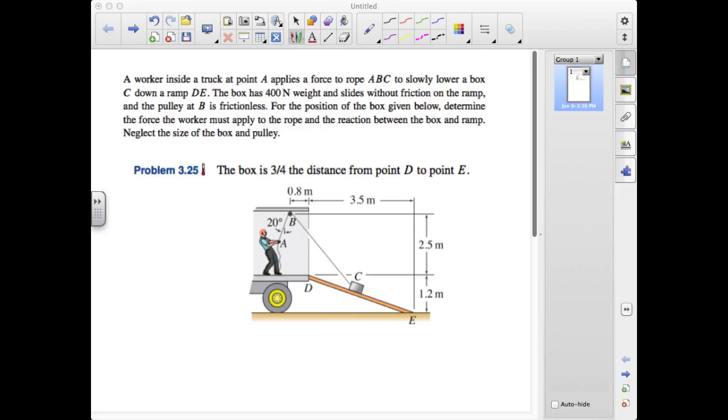We're given the box's weight and we're further given that it slides without friction on the ramp and that the pulley at B is frictionless. For the position of the box on the ramp given specifically in the Problem 3.25 statement, we want to find the force the worker must apply to the rope and the reaction force between the box and the ramp. We're further told to neglect the size of the box and the pulley.